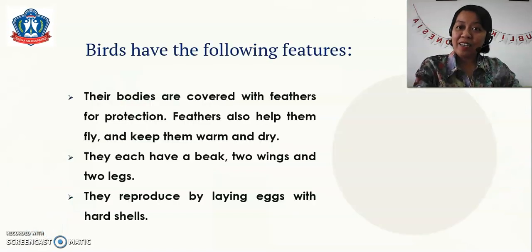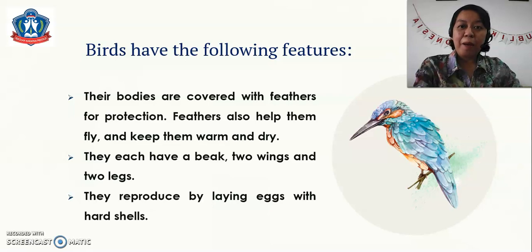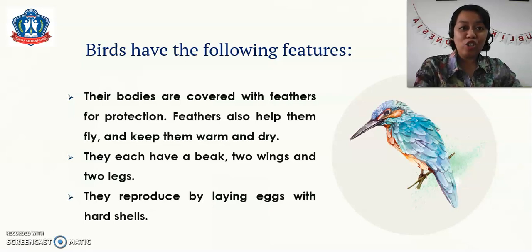To start, we have birds and their following features. Their bodies are covered with feathers for protection. Feathers also help them fly and keep them warm and dry. They each have a beak, two wings, and two legs. They are produced by laying eggs with hard shells.